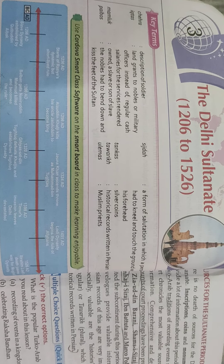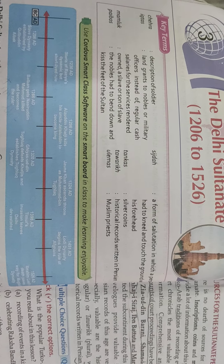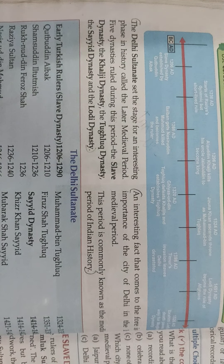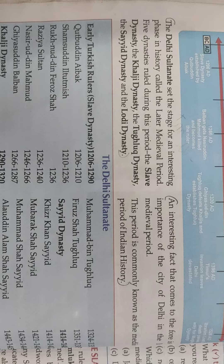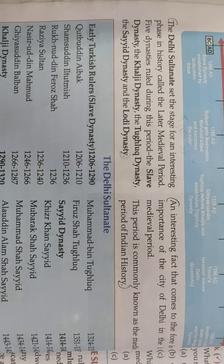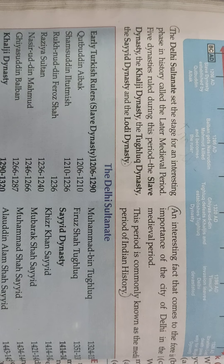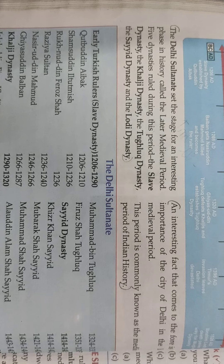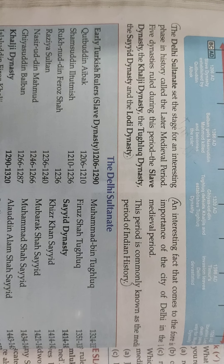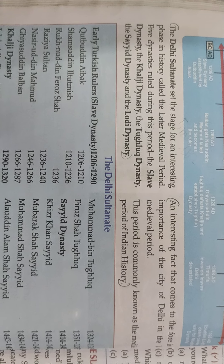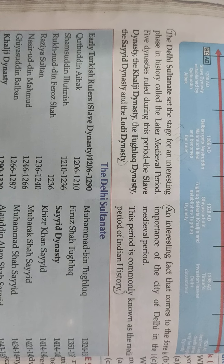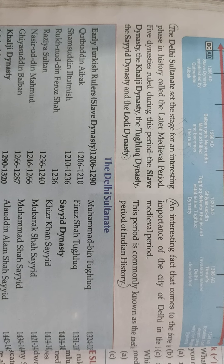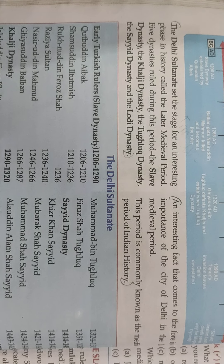Today, our lesson is the Delhi Sultanate. You will learn that in Delhi, there were different dynasties. The Delhi Sultanate set the stage for an interesting phase in history called the Later Medieval Period. Five dynasties ruled during this period — five dynasties came from Delhi.